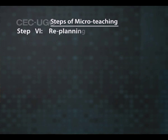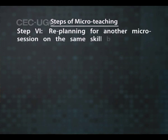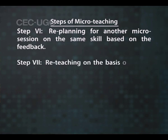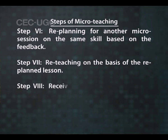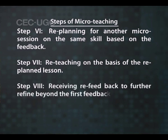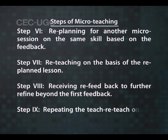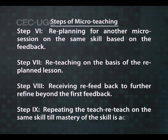Step 6: re-planning for another micro-session on the same skill based on the feedback. Step 7: re-teaching on the basis of the re-planned lesson. Step 8: receiving re-feedback to further refine beyond the first feedback. Step 9: repeating the teach–re-teach cycle on the same skill until mastery of the skill is achieved.